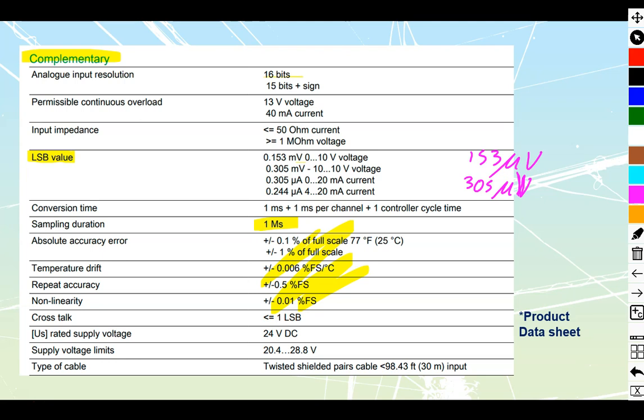Then we're going to go to this section where it tells us about the rated supply voltage. Now the rated supply voltage is not the 0 to 10 volt. This is to power up the card because the card itself needs to have power brought into it. 24 volts rated, it could go down as low as 20.4 and up to as high as 28.8. They tell us that the cabling should be kept to under 30 meters of twisted shielded pair cable.